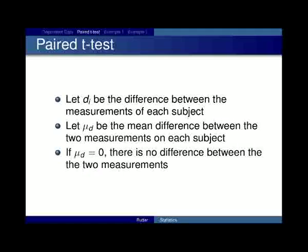A little definition. Let di be the difference between the measurements of each subject or the i-th subject. Let mu_d be the mean difference between the two measurements on each subject. And then, if the mean, if mu_d, if the mean of the difference is zero, there is no difference between the two measurements.